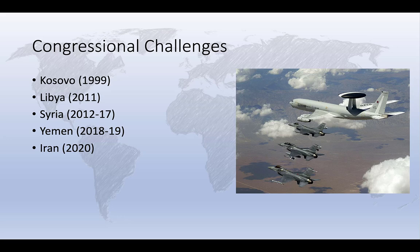During the Trump administration, Congress also passed legislation invoking the War Powers Act and prohibiting the deployment of American forces to operations in Yemen and Iran. Both bills were vetoed by President Trump, asserting that they were unconstitutional violations of presidential authority over the use of force.